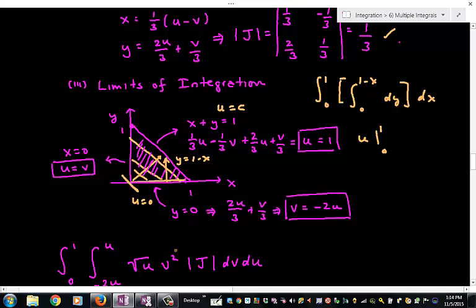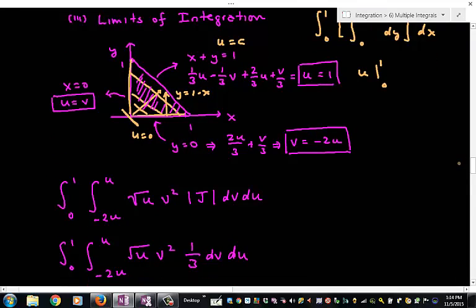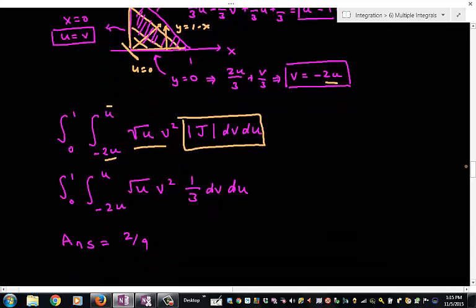When I evaluate these other two boundaries, I find on the horizontal axis, the y equals 0 boundary translates into v equals minus 2u. And the boundary x equals 0 translates into u equals v. So the smart way to do this integration is to change the integrand, change the differential, and now let u go from 0 to 1. Since u is positive, minus 2u will be the lower limit of integration, and u will be the upper limit of integration. When you substitute in for the Jacobian and do this integral, you should get 2 ninths.